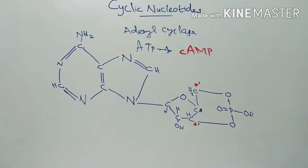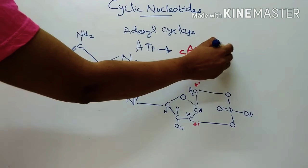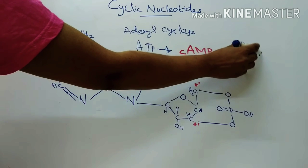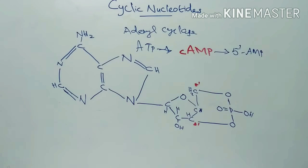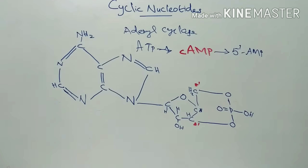Cyclic AMP is degraded in the tissues by its conversion to 5' AMP. This reaction is catalyzed by the enzyme phosphodiesterase. So, cyclic AMP formation is from ATP by adenyl cyclase in the presence of Mg2+ ions, and degradation is by conversion to 5' AMP catalyzed by phosphodiesterase.